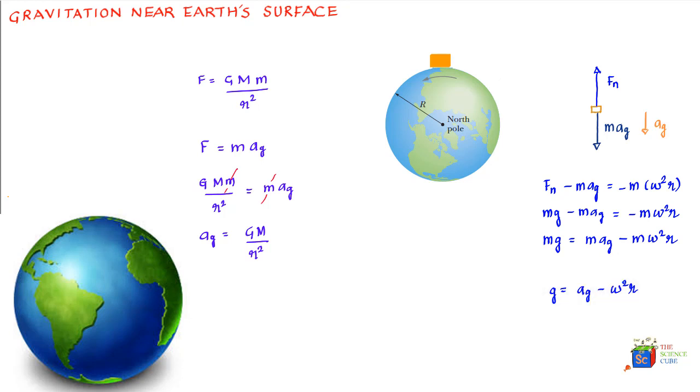Now you would have also observed that this difference would be greatest if r is at the highest, and the highest r is at the equator only. So the g value is least at the equator and highest at the poles where r actually becomes zero.